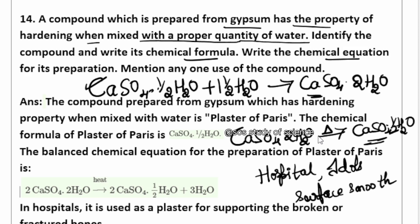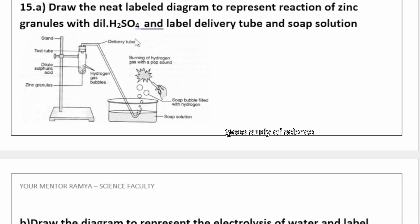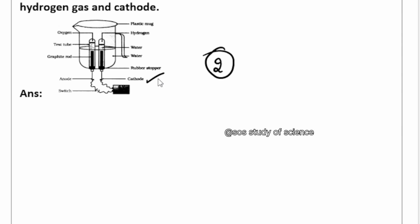These diagram questions are very frequently asked in the examination. You should know how to draw and label a neat diagram showing the reaction of zinc granules with sulphuric acid — for 2 or 3 marks in both state and CBSE boards. You can also expect the diagram of electrolysis of water. Learn all the parts and labels.